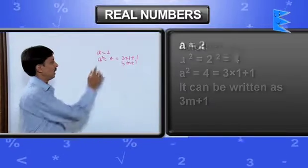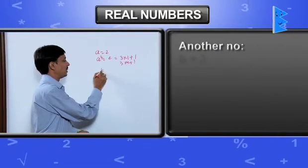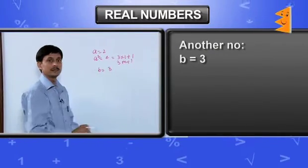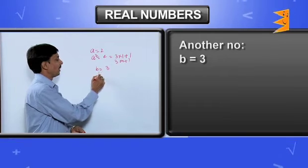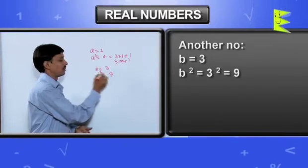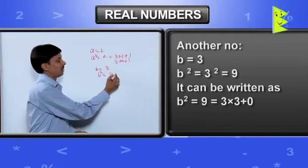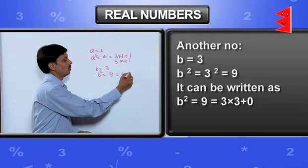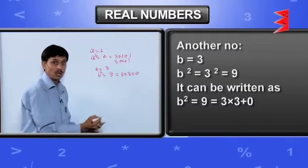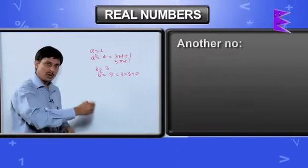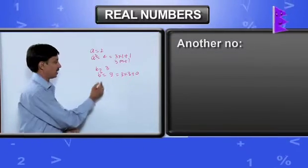Suppose you have taken another number, suppose you have taken it as 3, and you're going to make its square. b square becomes 9 which can be written as 3 into 3 plus 0. You can take more examples.